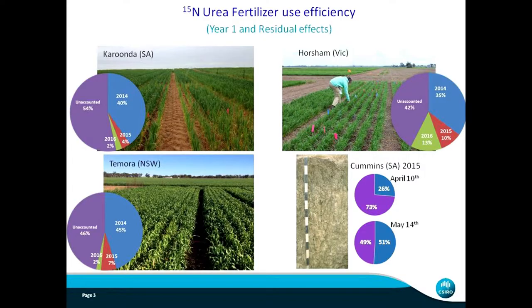Because approximately 50 percent is left, some of it would have been lost through leaching or denitrification. We grew the next two wheat crops on the same area and measured how much residual N came through - that is the red and green slices of the pie charts. The extra nitrogen coming through in the next two years is between two and ten percent. So fifty percent of the N applied is not taken up by the first crop, not taken up by the next two crops - it is either lost one way or another.